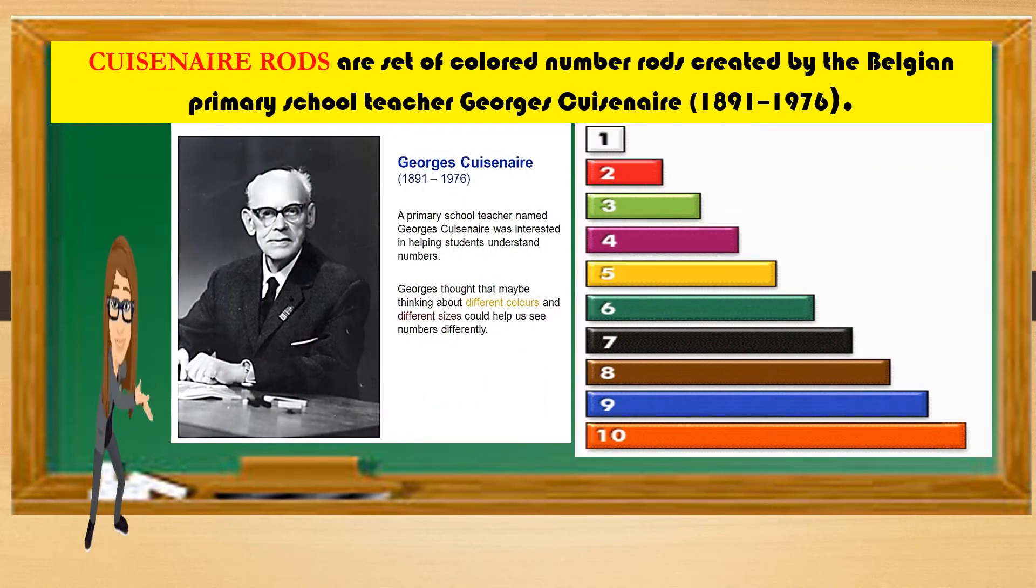We have Cuisenaire rods, a set of colored number rods created by Belgian primary school teacher George Cuisenaire in 1891 to 1976. George thought that thinking about different colors and sizes could help us see numbers differently.